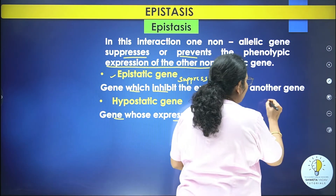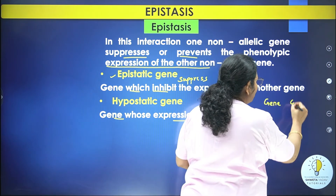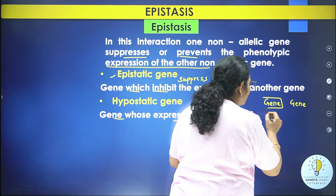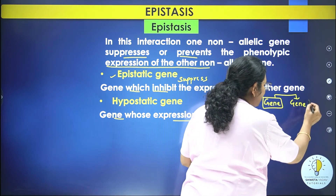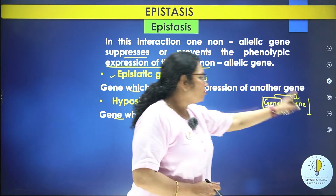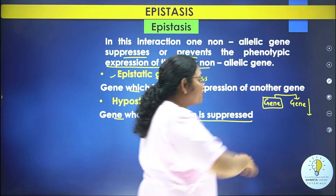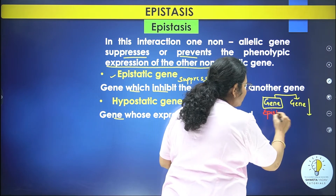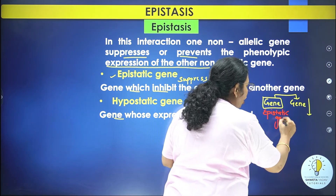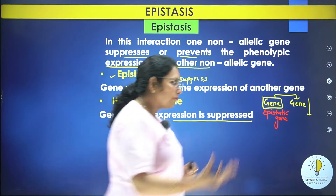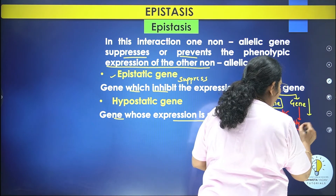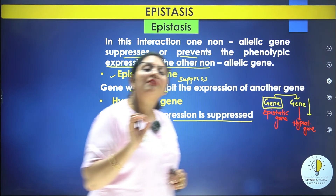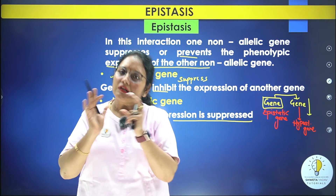Let's take a situation. Suppose there are two genes. The gene that blocked the expression of the other gene becomes the epistatic gene, and the gene whose expression was blocked is called the hypostatic gene. It is very important to understand which genes are hypostatic and which are epistatic.